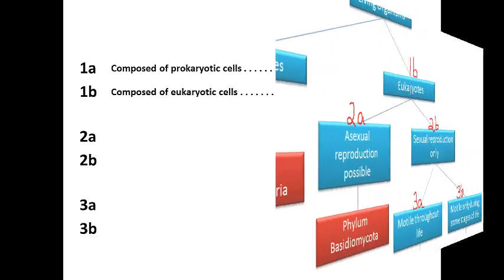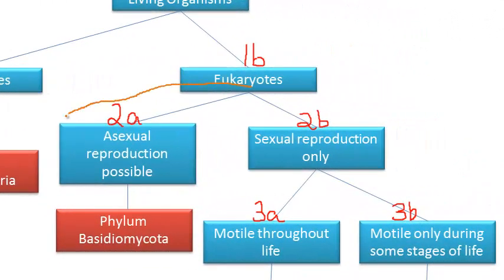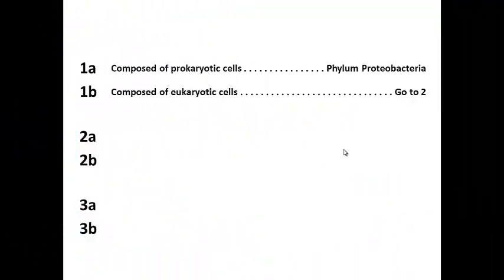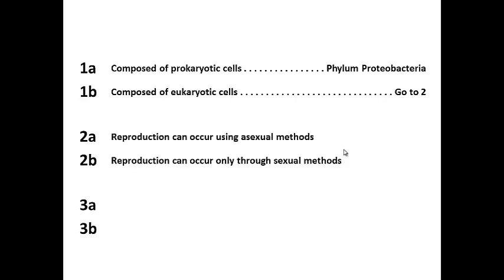I return to my flow map again and look at statements 2A and 2B. Both of these statements deal with reproduction. Since both statements on the dichotomous key should sound similar at the beginning, I will begin my phrases with reproduction can occur. I return to my dichotomous key chart and fill in 2A with the phrase, reproduction can occur using asexual methods. I then complete 2B with the phrase, reproduction can occur only through sexual methods.